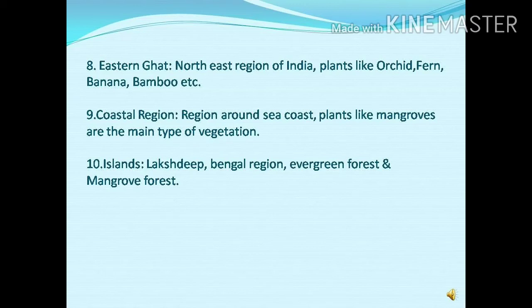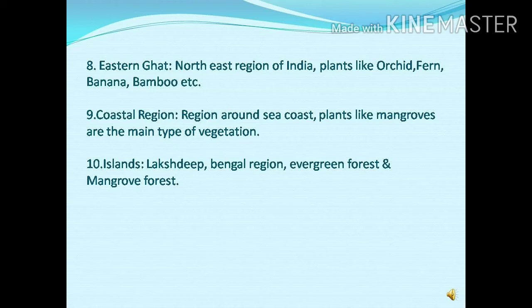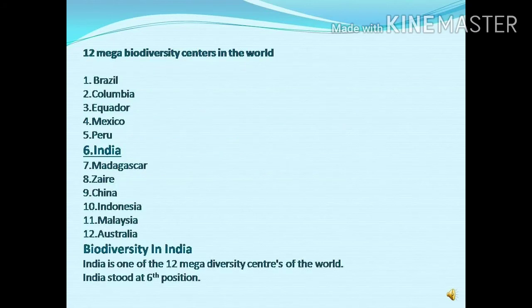The last biogeographic region of our country is islands. We have four or five islands along the south of our country, like Lakshadweep and the Andaman and Nicobar Islands. In this region, the land is surrounded by sea water on all sides. At some places there are virgin kinds of forest you can see here. Very rare groups of plants can be found on the islands.